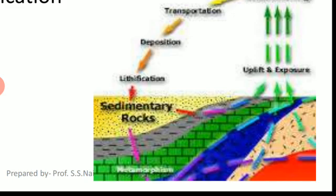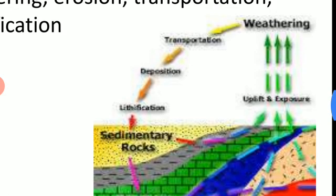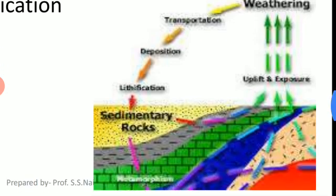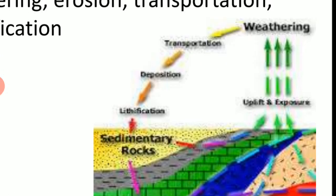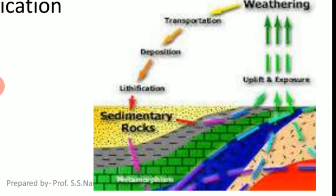Look at this image. A parent rock is formed and exposed. Due to weathering action, material is moved away with water or air and transported to another place. It is then deposited, lithification occurs, and after lithification a new rock is formed — that new rock is called a sedimentary rock.